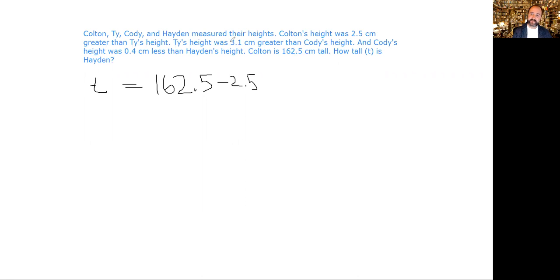We know Ty is 3.1 more than Cody, so let's take away that 3.1. And we know that Cody is less than Hayden at 0.4, so let's add that 0.4 back in. Then it's just math, adding those numbers up.